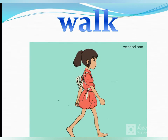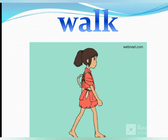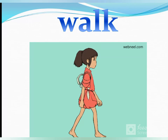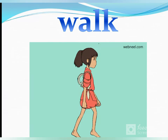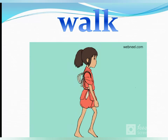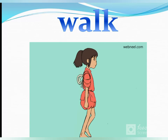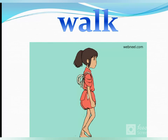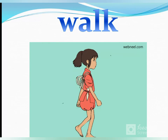Teacher will show a picture and ask what the girl is doing. She is walking. Some students may not pronounce 'walk' correctly, so teacher will teach the correct pronunciation. Students will pretend to walk while standing on their seats and repeat the word 'walk' about 5 to 10 times.